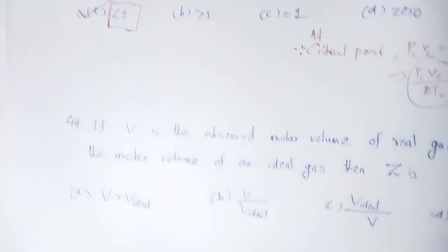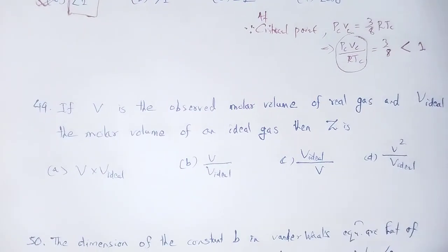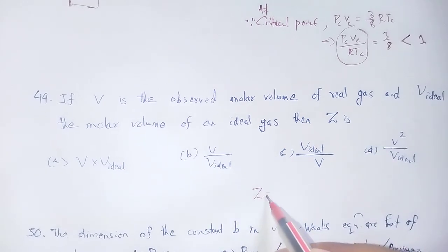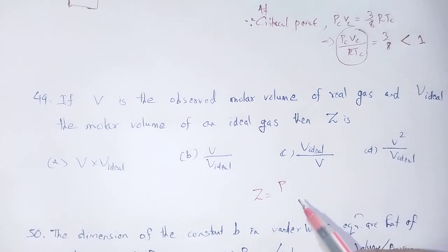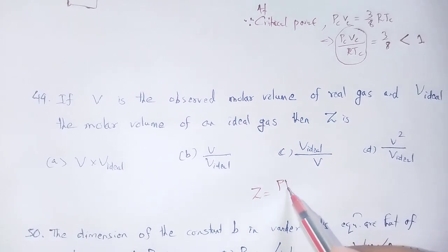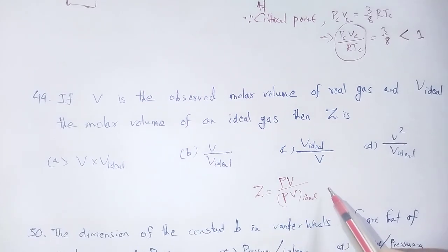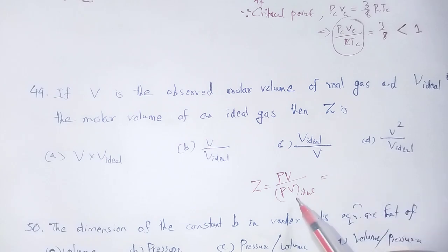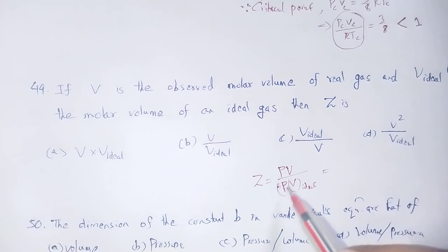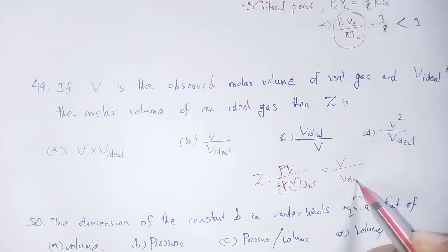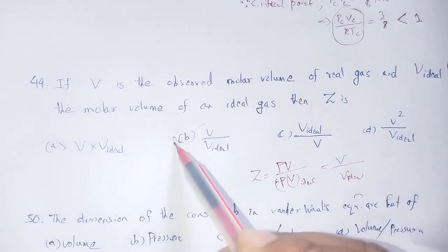Question 49: If V is the observed molar volume of a real gas and V_ideal is the molar volume of an ideal gas, then the compressibility factor Z equals V divided by V_ideal. Option number B is correct.